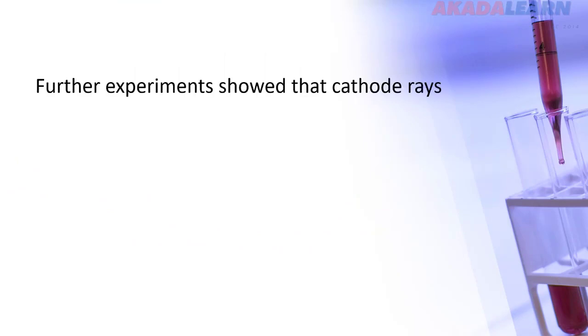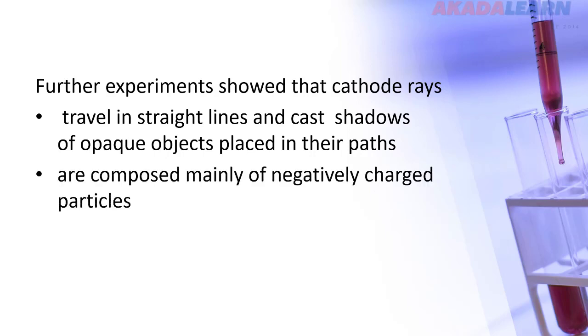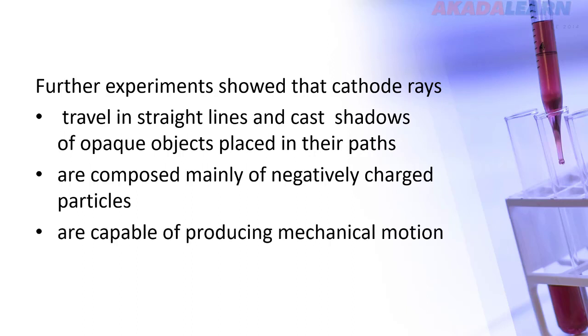Further experiments showed that the cathode rays, which of course now we know as the electrons, travel in straight lines and cast shadows of opaque materials placed in their path. That they are composed mainly of negatively charged particles. And also that they are capable of producing mechanical motion. They are also identical in nature. All these are the characteristics, the properties of the cathode ray that were experimentally discovered.